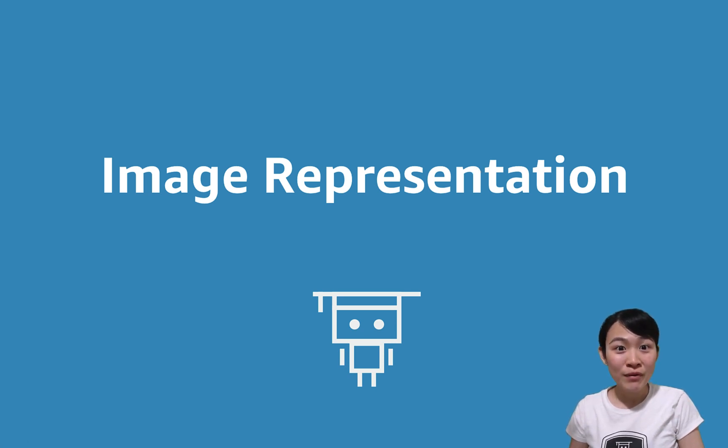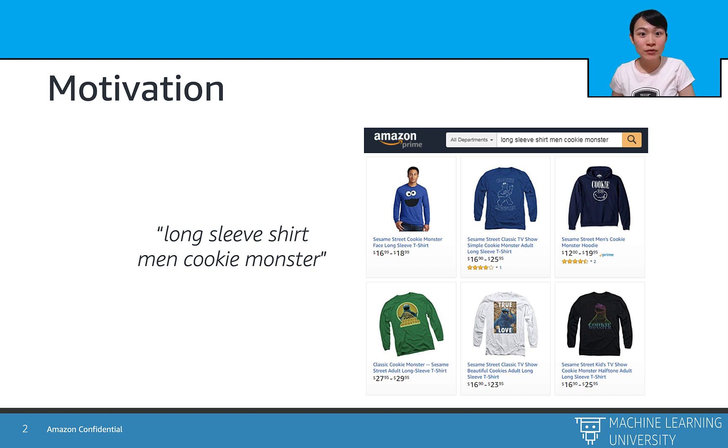In this video, we will see how a computer reads and processes an image. Suppose we want to find a long sleeve shirt for men with a cookie monster on it. It might be easy for a program to find a long sleeve shirt for men, but how do we know that there is a cookie monster on it? What if someone never seen a cookie monster before? How do we enable them to learn it?